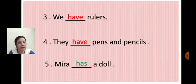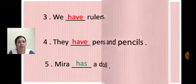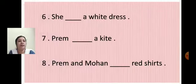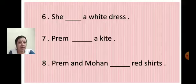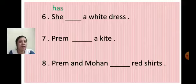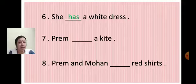Done? Shall I change the slide? Next: She dash a white dress. Here the sentence begins with she, so we write has. She has a white dress. H-A-S.